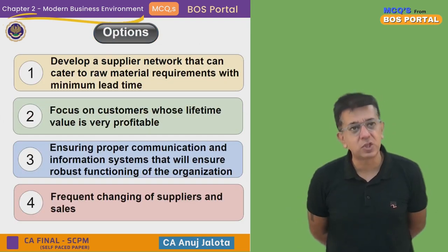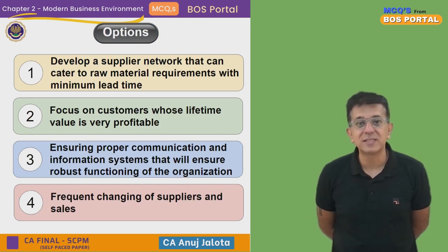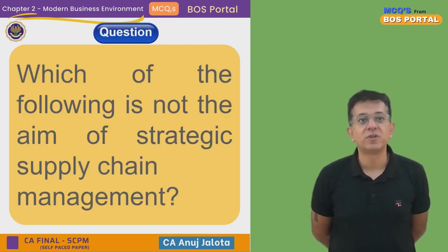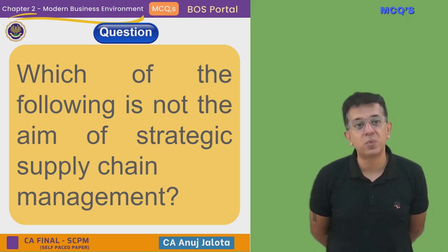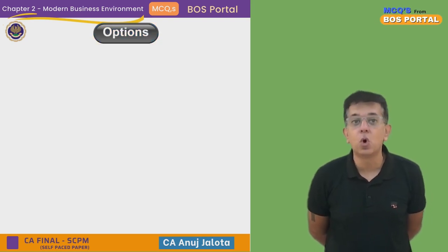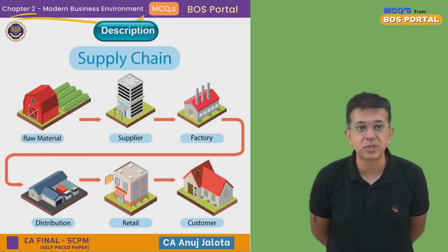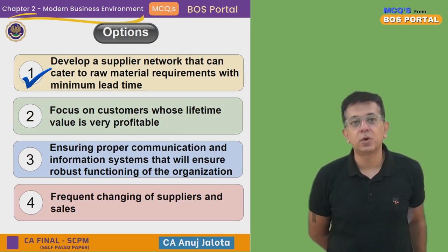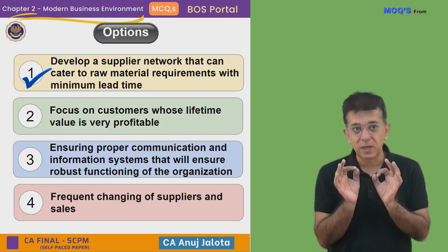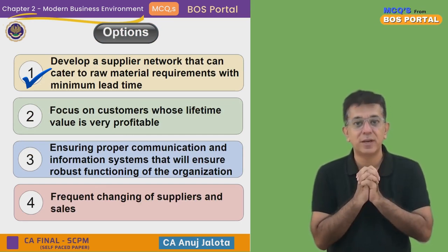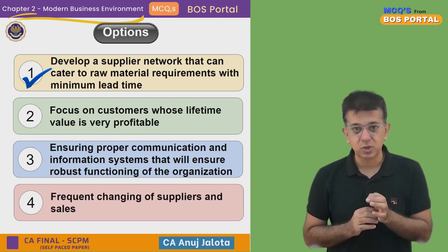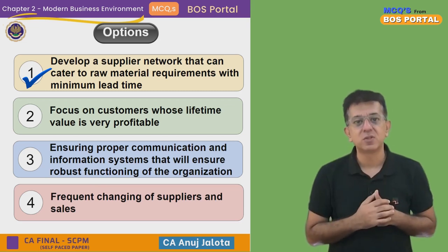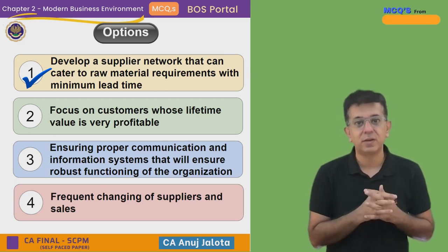Coming back to the question — which of the following is NOT the aim of strategic supply chain management? Option A: develop a supply network that can cater to raw material with minimum lead time. Of course you should concentrate on this as part of supply chain management — if you can get material fast, you will be able to respond to any problem more quickly.